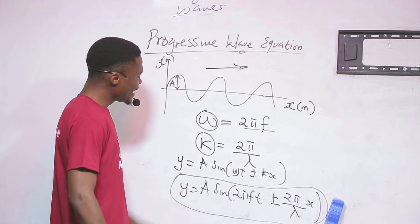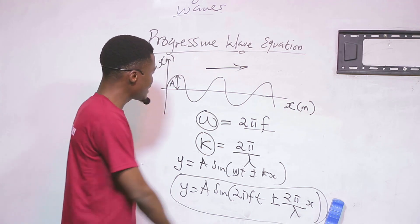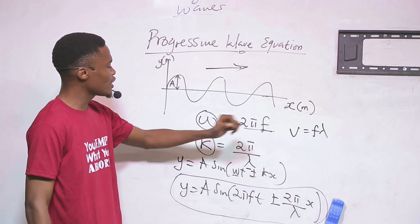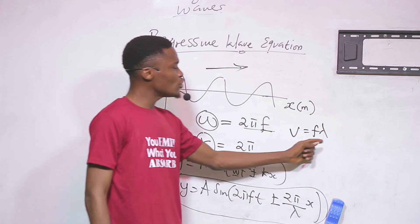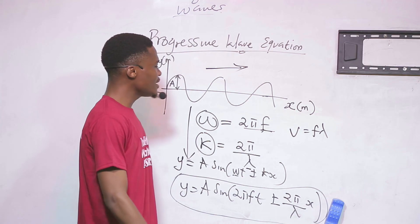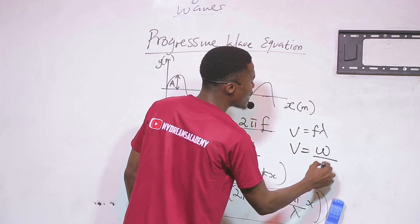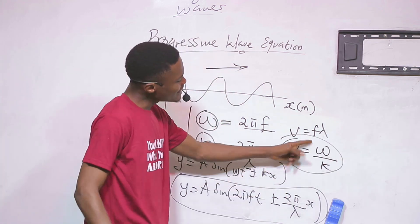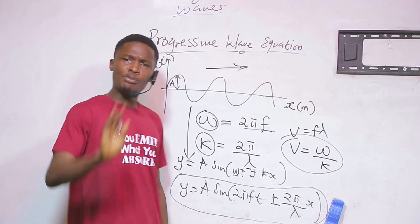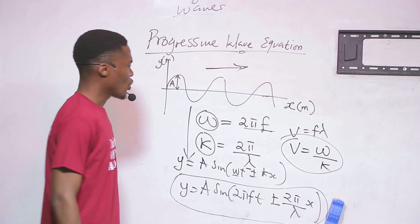An exam question might ask you to find the velocity of a wave. You could find frequency then wavelength and use v = fλ, but in a fast-paced exam you need answers in five to ten seconds. Instead, use the quick formula: v = ω/k. Whatever omega is, divided by k, gives you the velocity. This formula may not be in your textbook, but keep it at the back of your mind — we will look at an example shortly.